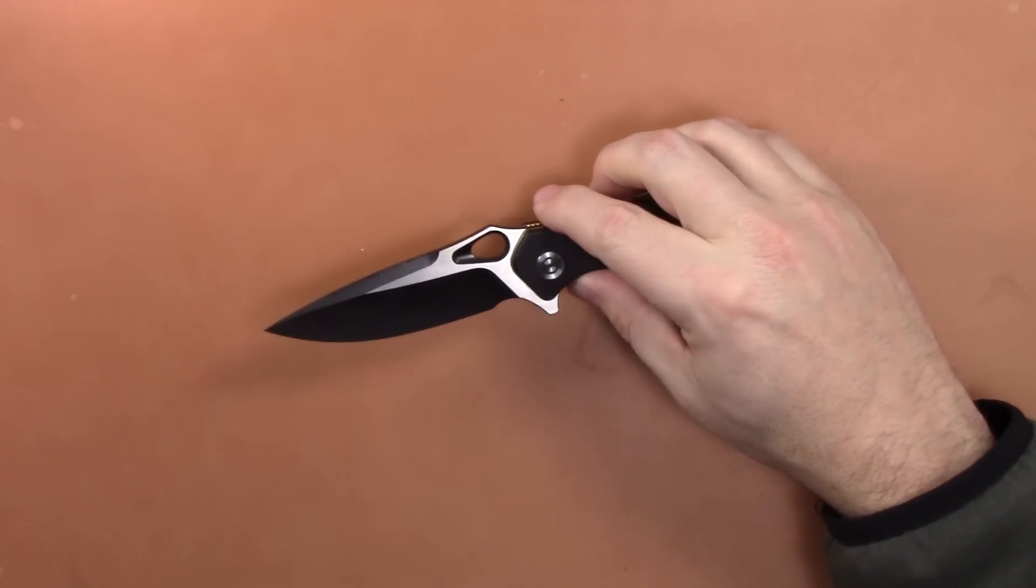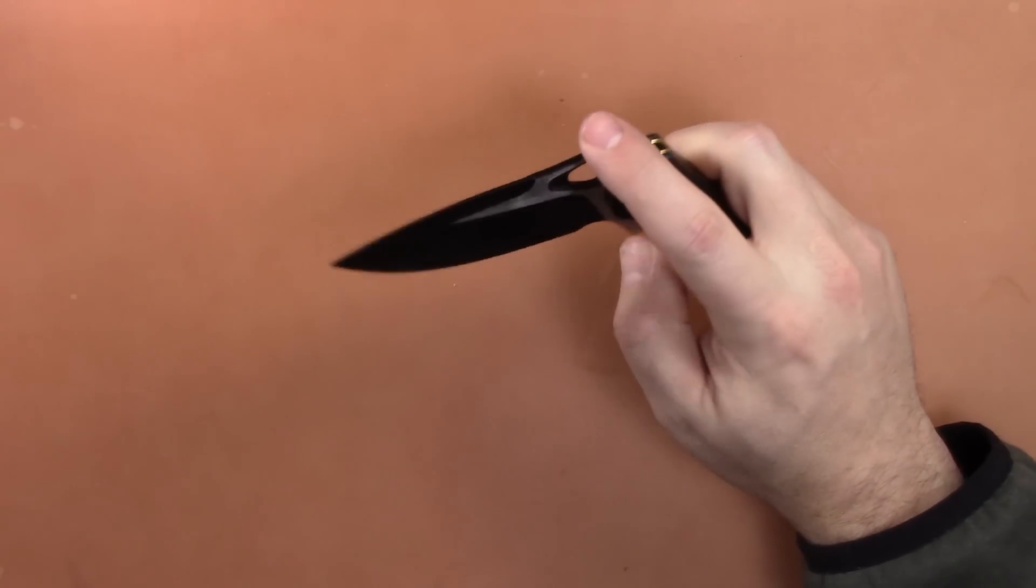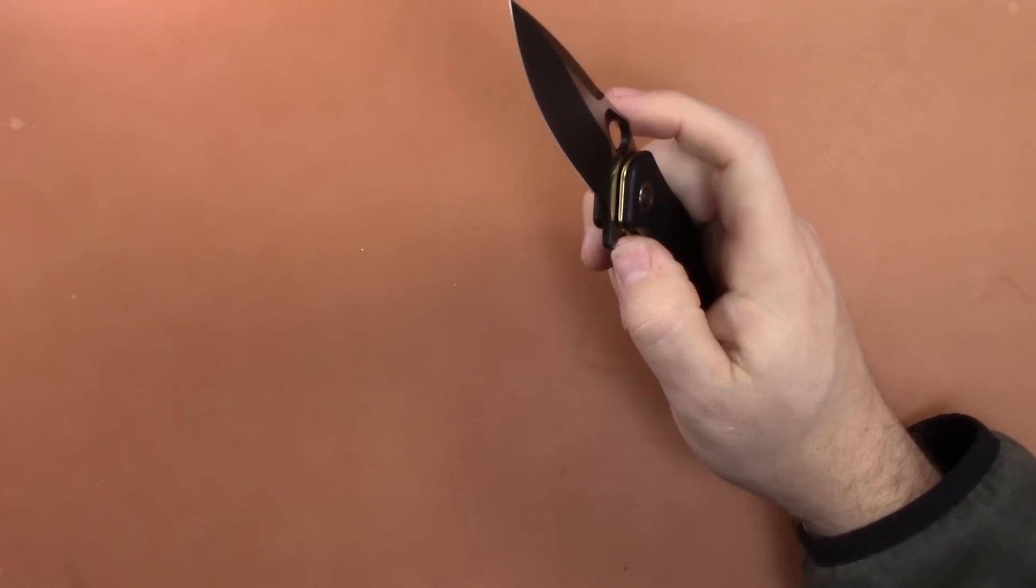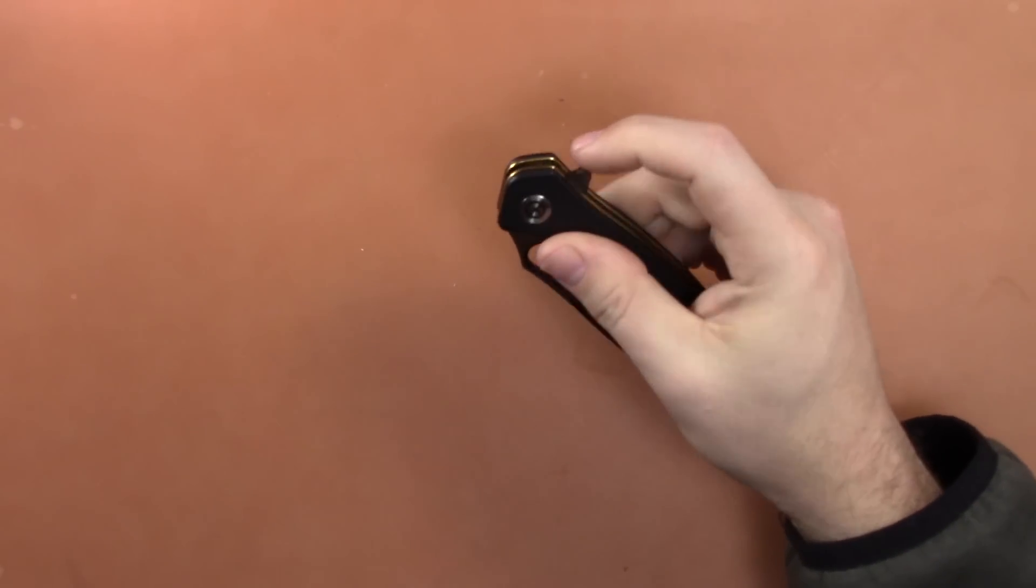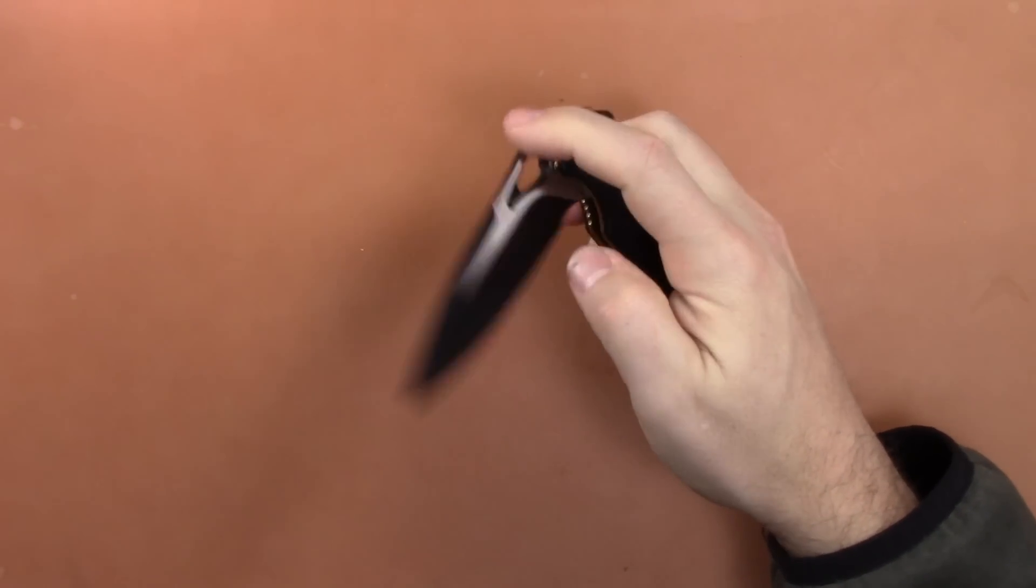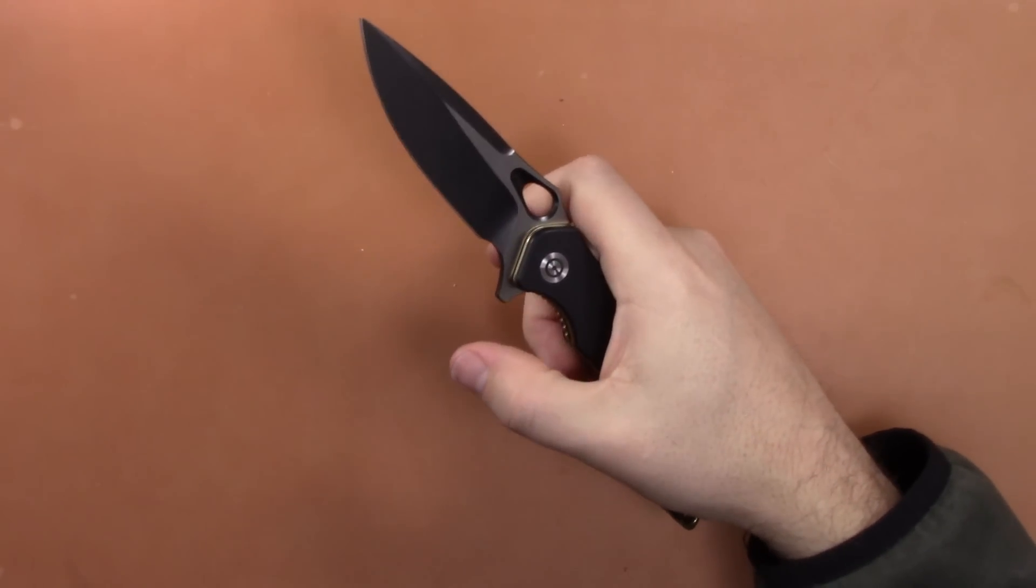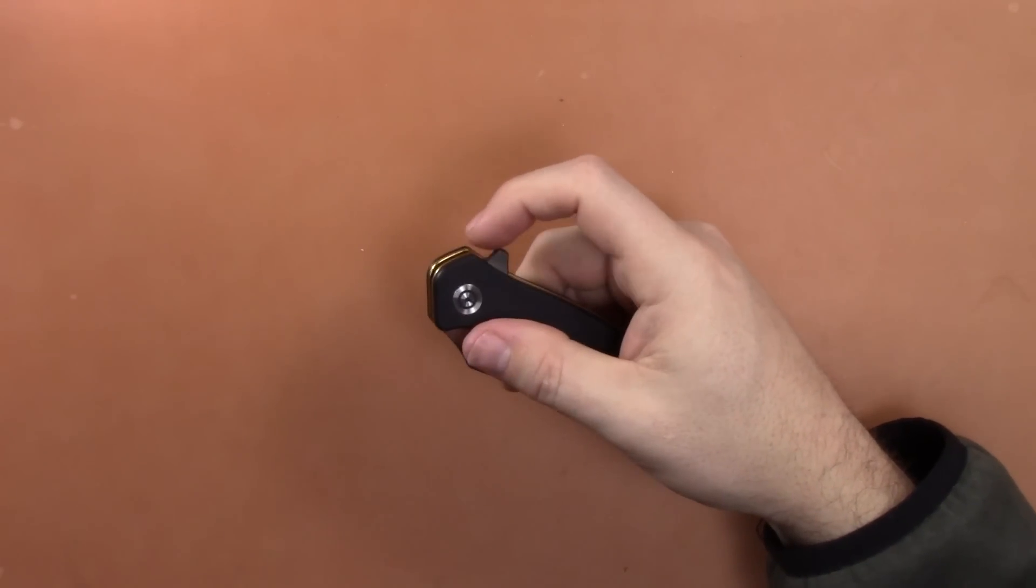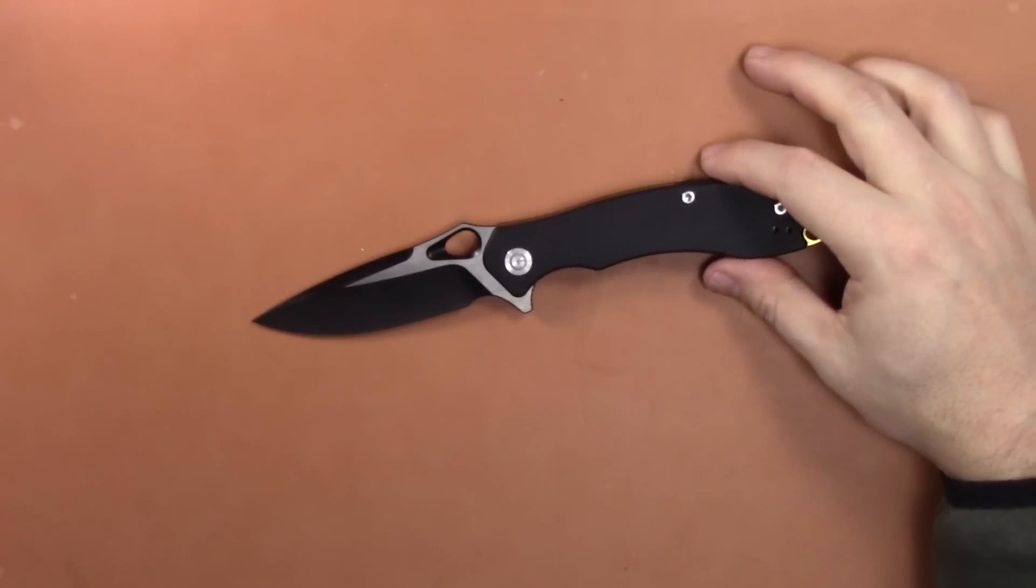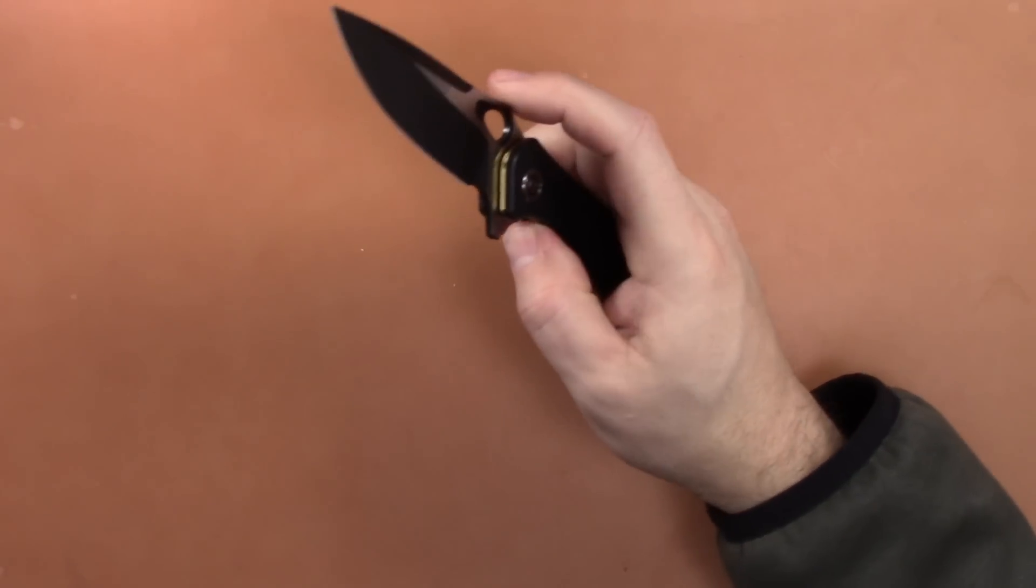But let's talk about the action. It does ride on ceramic bearings, ceramic detent. It is fantastic. It is a dialed in action for flipping the knife with the flipper, with the middle finger flick, with the hole and thumb stud deployment. It literally deploys all three ways pretty much perfectly. That's pretty rare for someone to dial in the action that well.